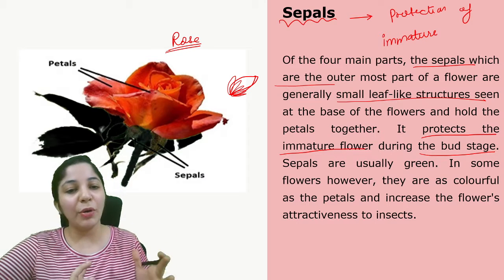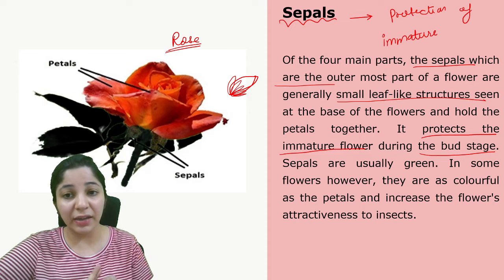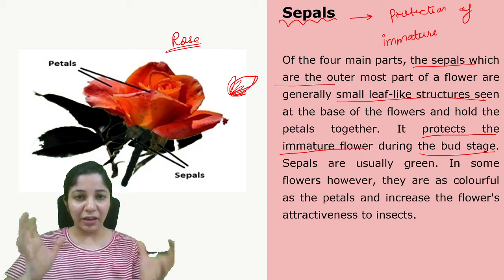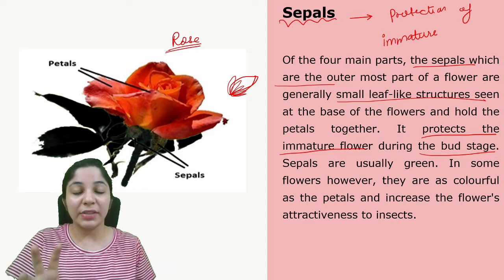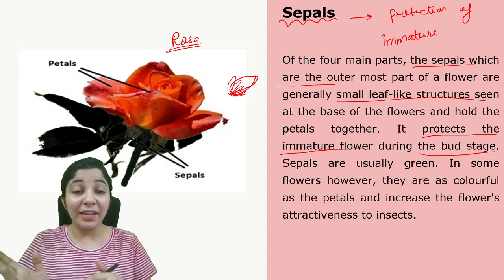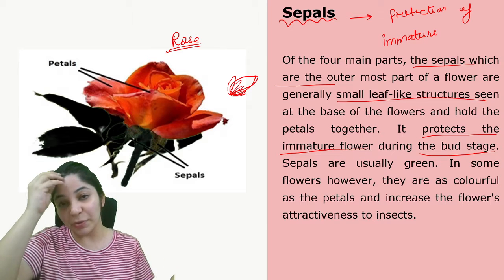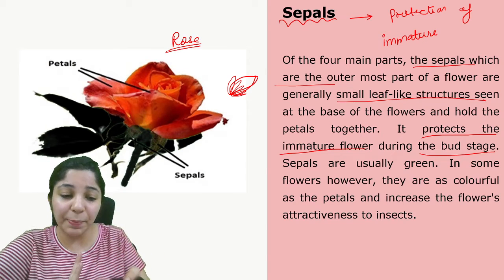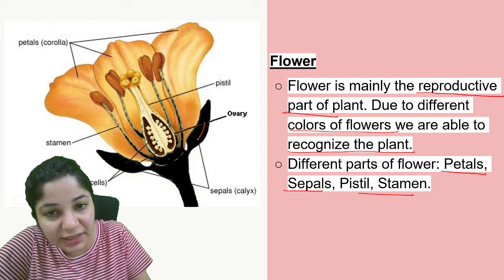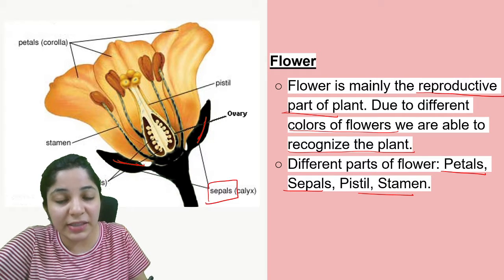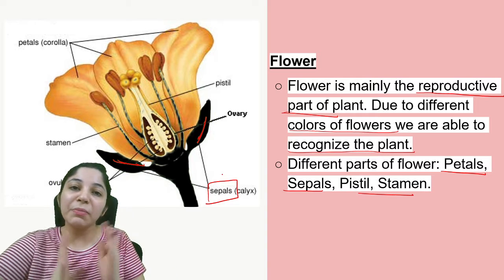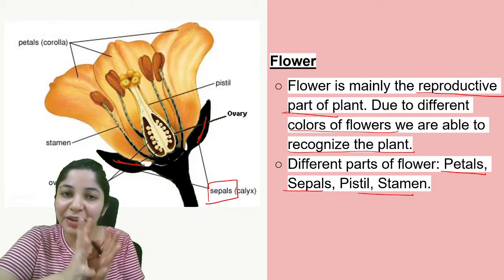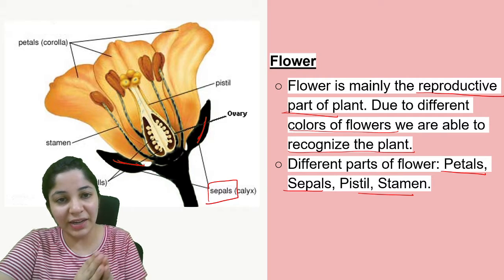Generally sepals are green in color, but in some flowers they are colorful — the same color as the flower itself. This is why they attract insects, and these insects are also responsible for pollination and reproduction of the flowers. As you can see in the image, these green parts of the plant are sepals. These sepals protect the flower in its immature stage — when the flower has not started growing yet, it is very tender and delicate, and sepals are there just to protect the bud.